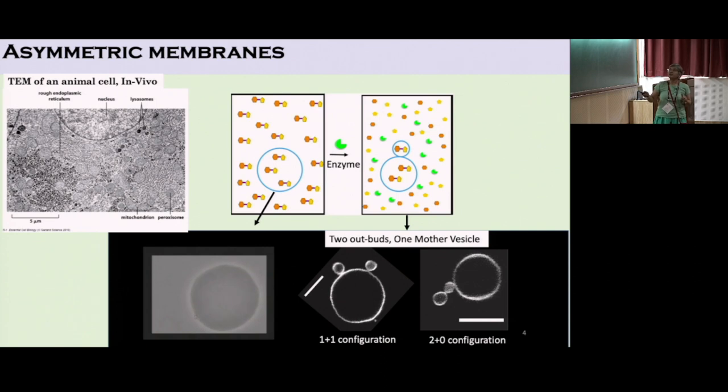It creates an asymmetry, not in the leaflet but in the solution. The environment, the solution inside the compartment is different from the solution outside. The two leaflets of the membrane now face a different environment and the membrane is asymmetric. The question we're asking is what it does to the membrane.